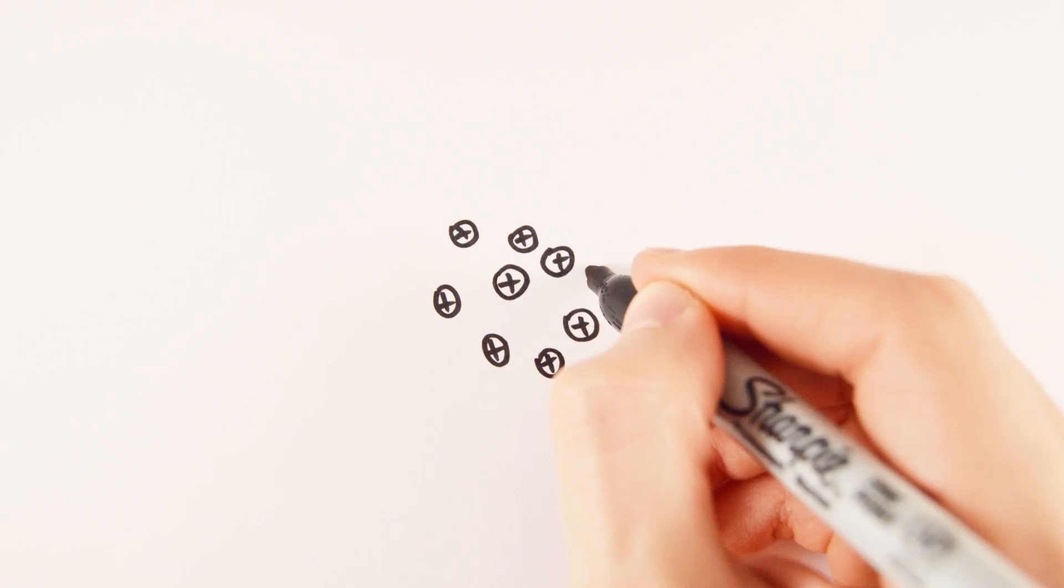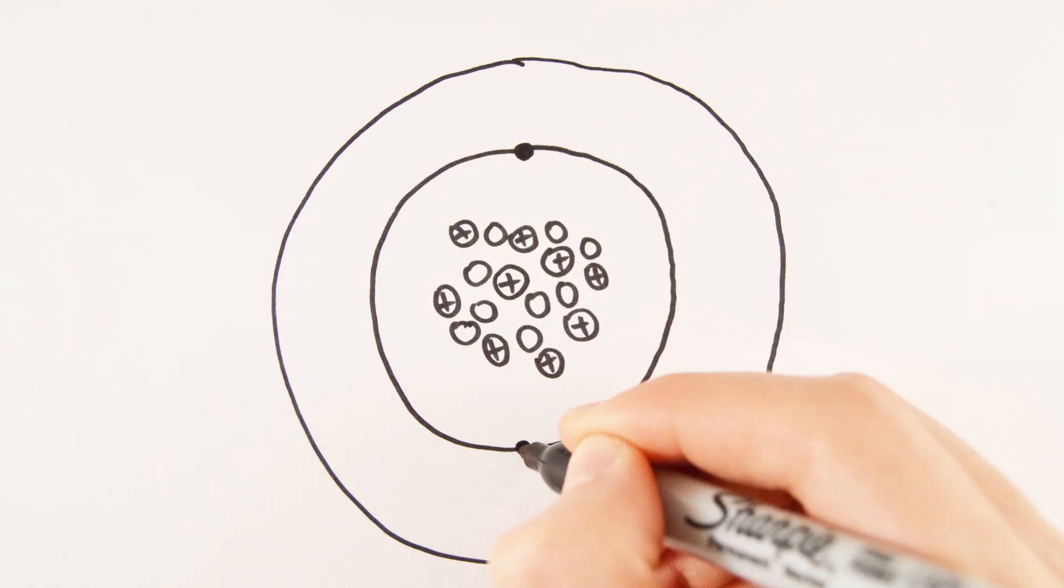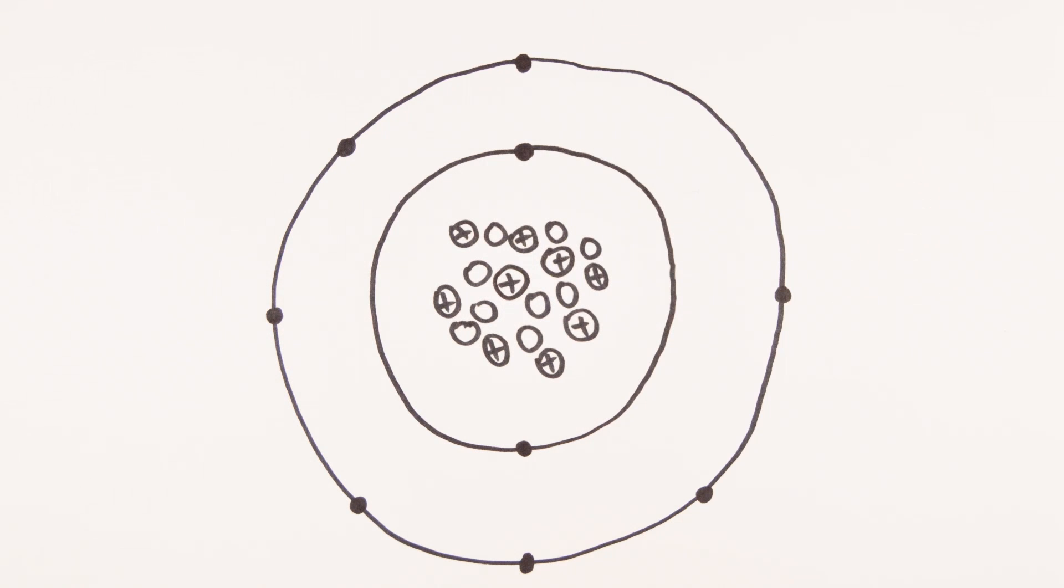The number of electrons and protons in an atom are always equal, giving it an overall charge of zero. If an atom loses or gains an electron, it becomes a charged particle called an ion.